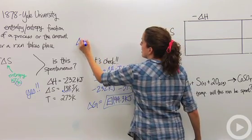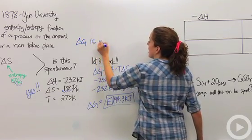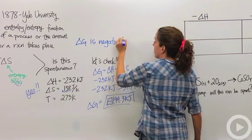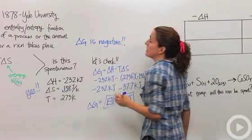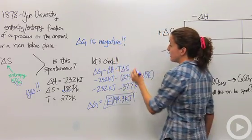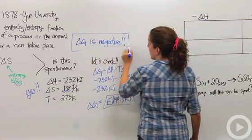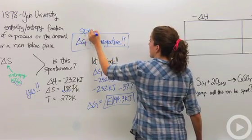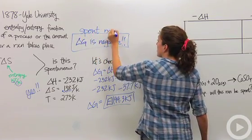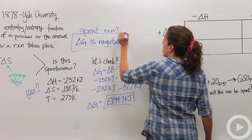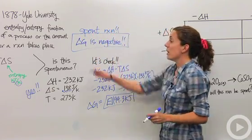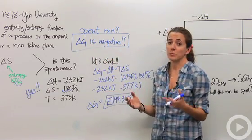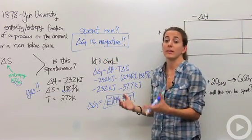Delta G must be negative in order for a reaction to be spontaneous — it must be negative. So our combination of enthalpy and entropy must give us a negative delta G.